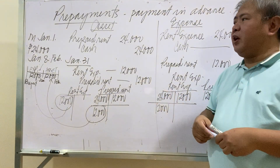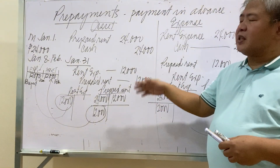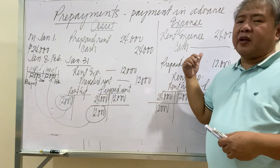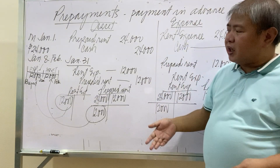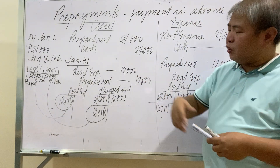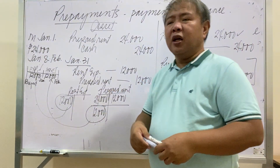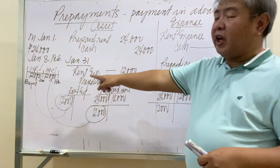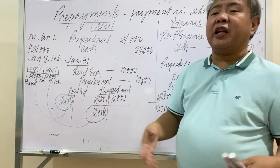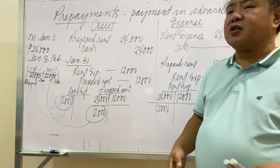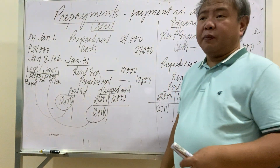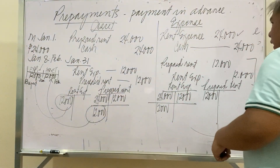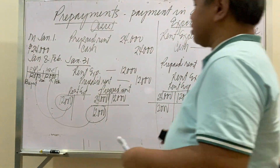Our conclusion is that whether you use the asset method or the expense method, you will arrive at the same amount for prepayment (asset) and the expense portion. I suggest drawing your own timeline to help analyze the details of the problem.